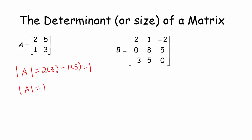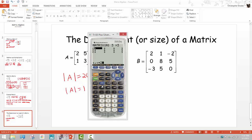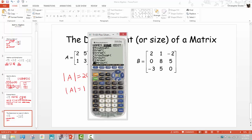For matrix B, let's use the calculator. I've entered it in. Going to matrix → math, there are all sorts of operations available. Determinant is the first option. Select determinant, then select the matrix, and enter. The result is negative 113 — so the determinant of matrix B is −113.